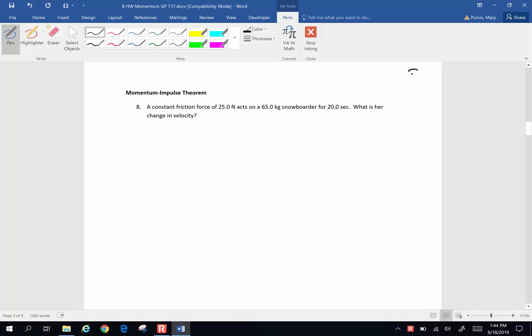Hi folks, we are going to work on some chapter 8 momentum and impulse problems, and here goes. A constant friction force of 25 newtons acts on a 65 kilogram snowboarder for 20 seconds. What is her change in velocity?